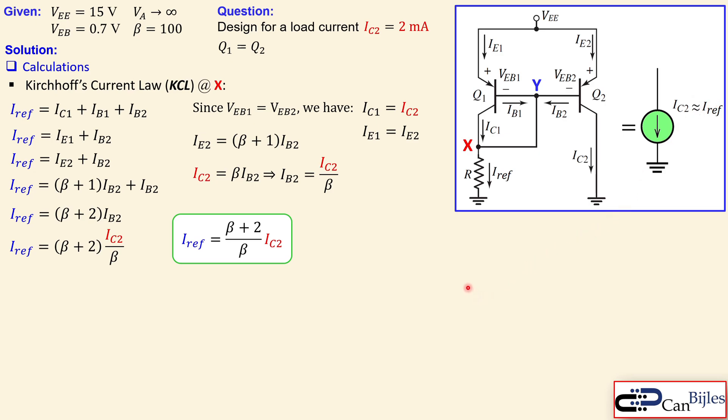There is a small error. It's not exactly equal to each other. But this error is quite small if you make the beta large. You can also make the load current expression in terms of the IRF. You just flip this fraction, you have this expression. So you can use one of these formulas for your design.